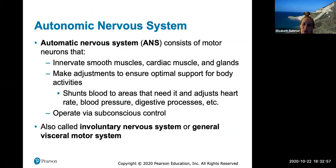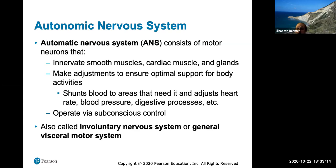This chapter is on the autonomic nervous system. It consists of motor neurons that innervate anything at a subconscious level — things you're not aware of, like your smooth muscles, cardiac muscles, and glands. These are involuntary. The ANS makes adjustments to ensure optimal support for body activities, shunting blood to areas that need it, and adjusting heart rate, blood pressure, and digestive processes. It's also called the involuntary nervous system or the general visceral motor system.